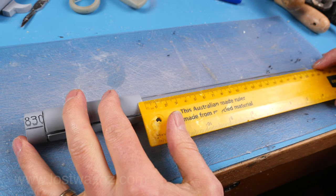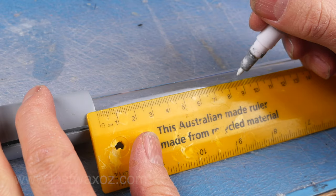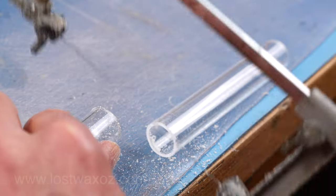Slide your mini barrel over the acrylic tube and make a mark 90 millimeters from the end of the mini barrel. Cut your acrylic tube at that mark.